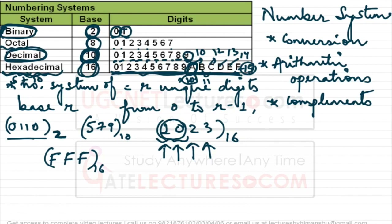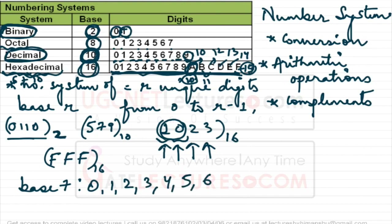Suppose I represent a number with a 7 in it and write its base as 7 — is that valid? This is actually a wrong representation. Why? Because if a number has base 7, the only digits possible are 0 to 6.